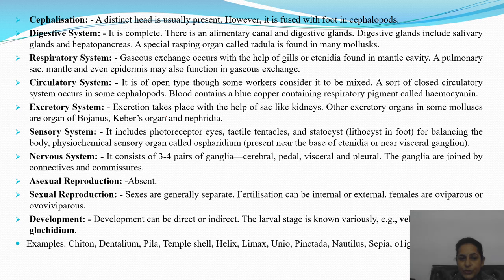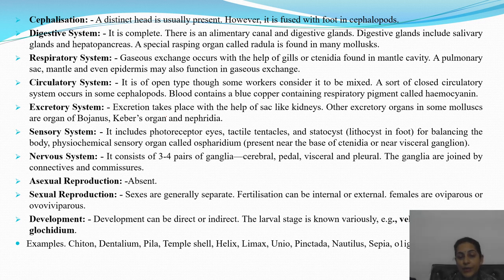Asexual reproduction is absent. Sexes are separate — male and female are distinct. Fertilization can be internal or external. Females are oviparous or ovoviviparous. Development occurs through larval stages like veliger larvae or glochidium larvae. Examples: Chiton, Dentalium, Pila, Turbo (temple shell), Helix, Limex, Unio, Pintada, etc.